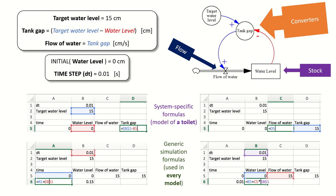A student asks: how do you know you have enough to solve the problem with a stock and flow diagram? As long as the diagram is syntactically correct, you can simulate it. The real question is whether it simulates something useful about the real world. If you make DT very small and the resulting water level trajectory doesn't look anything like a real toilet, you've left out some details. We put our mental model into a numerical model, run it, and if it matches the real world, that gives us confidence our mental model is correct. If it doesn't match, we update our mental model.